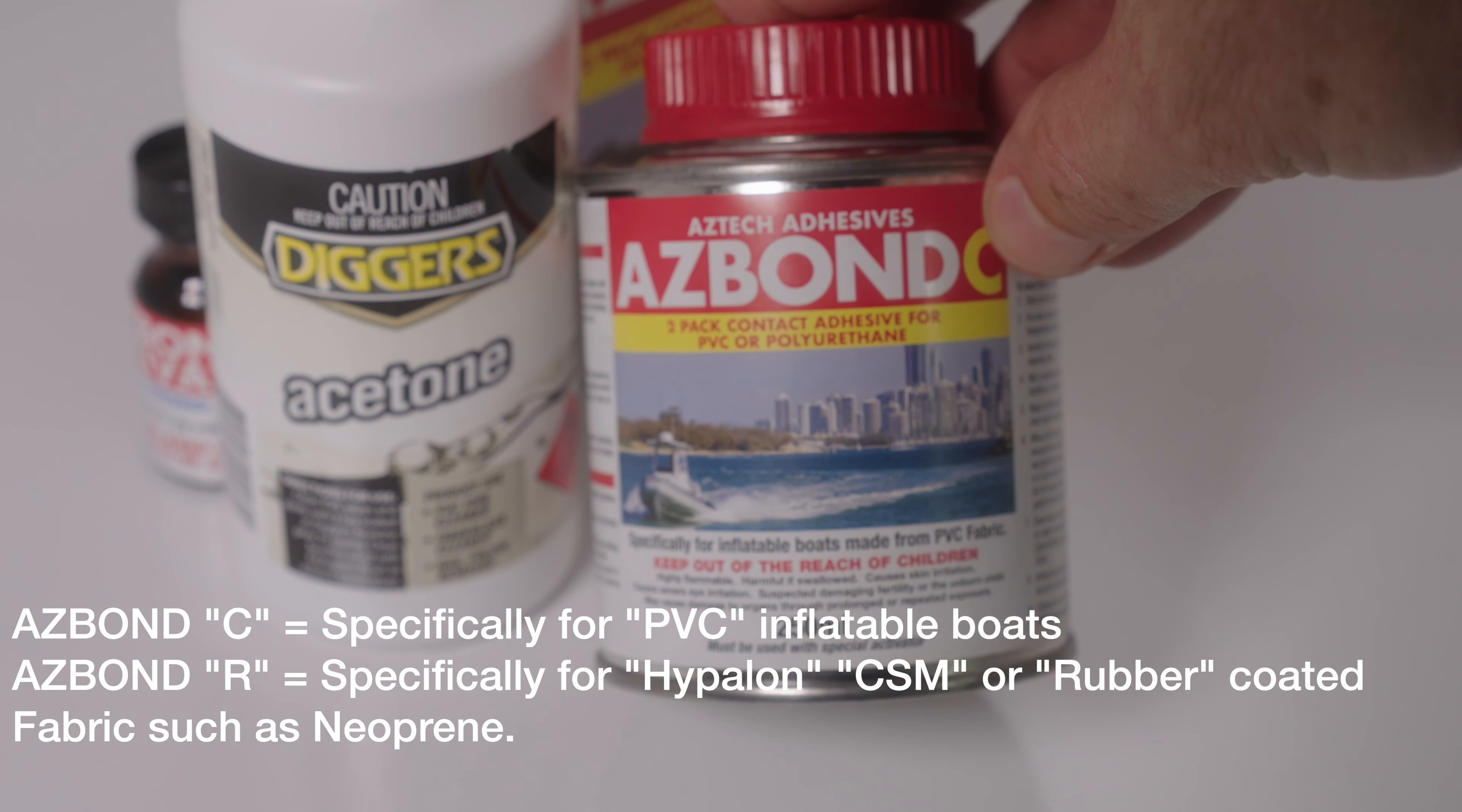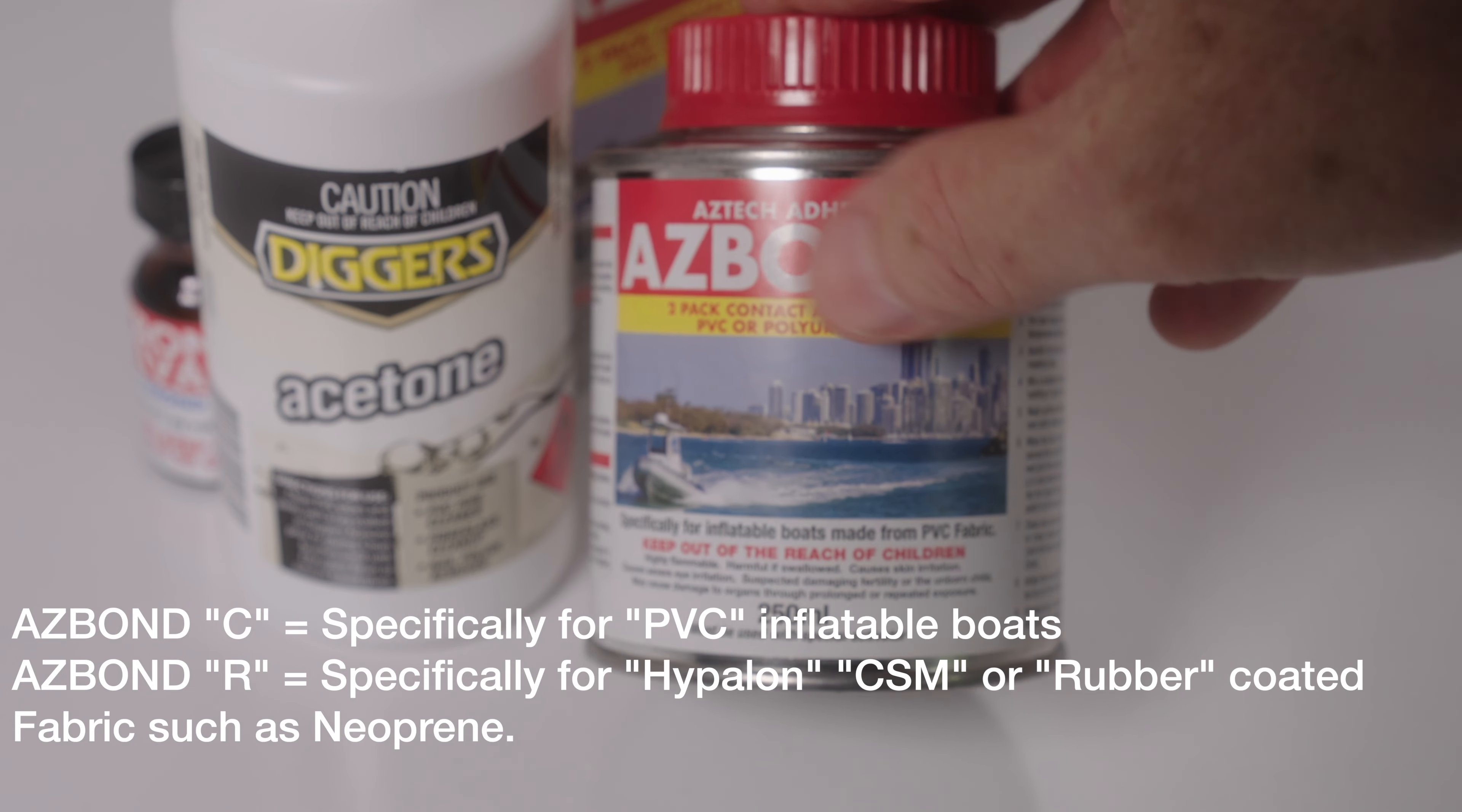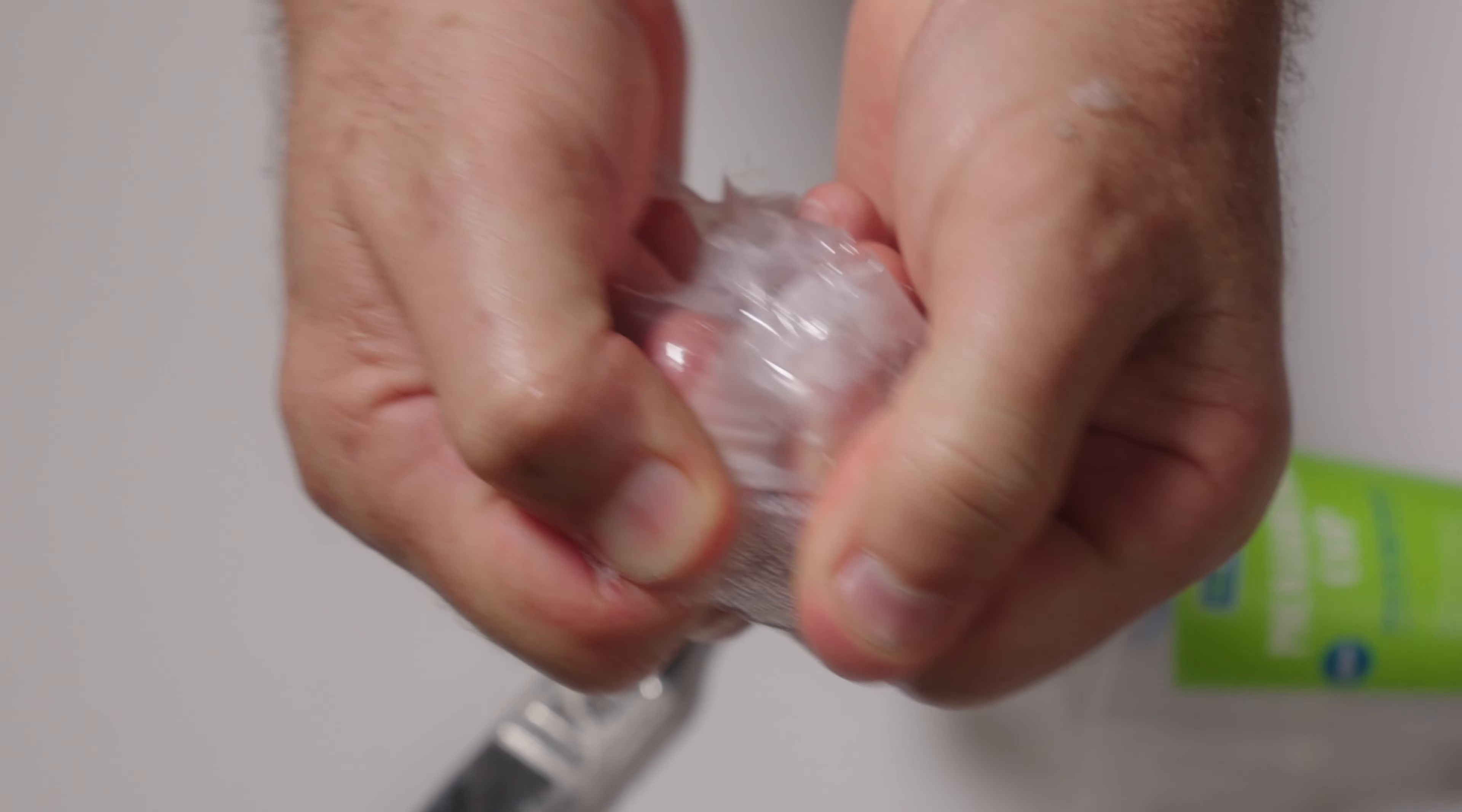This is a Type C glue. There is another type, Type A, for a different type of material, but this is specific for PVC. You can see how strong that is. It's really, really strong.